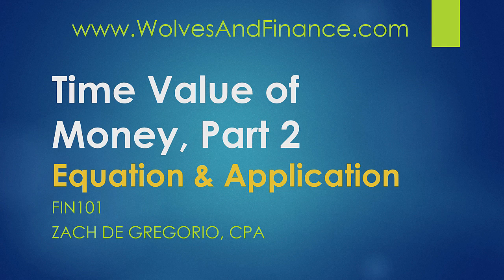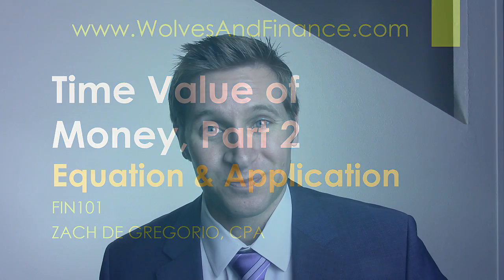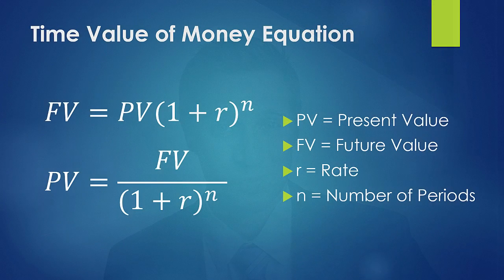Let's talk about the equation. I'm going to put it up, and you can see that there are four different variables: present value, future value, your rate, and the number of periods.